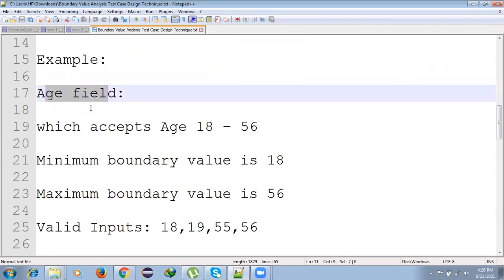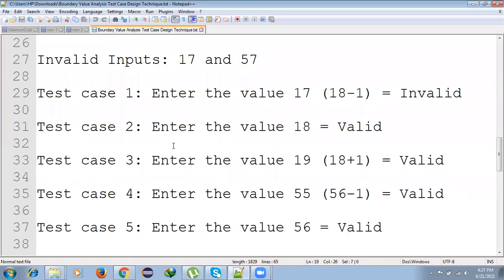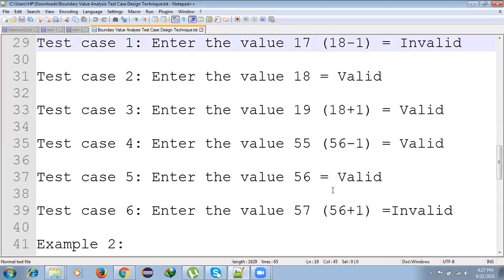Let's take an example: an age field which accepts age 18 to 56. Minimum boundary value is 18, maximum boundary value is 56. Valid inputs are 18, 19, 55, 56. We can use minus one and plus one. With four valid scenarios and two invalid scenarios, we can see invalid and valid scenarios are presented for this test case.